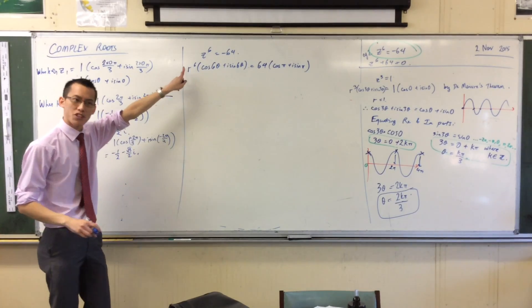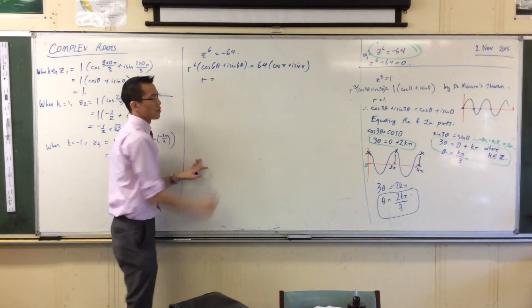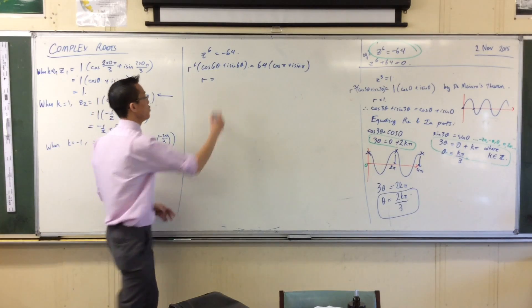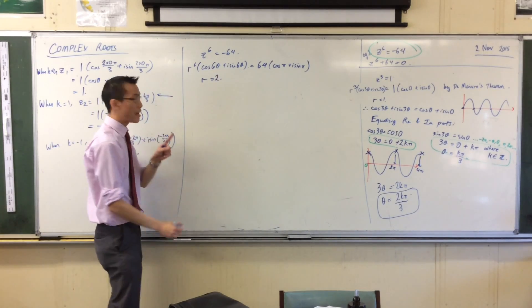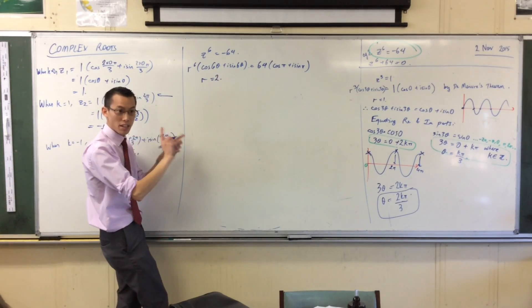From this I can read off the modulus. What's the power of 6 equals 64? It's just 2. So therefore now, equating real and imaginary parts, I can say cos of 6 theta equals...